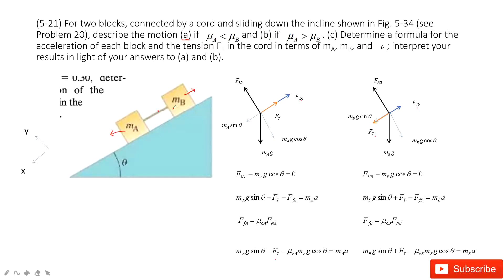In situation 2, if mu_A is larger than mu_B, then friction for A is larger and friction for B is smaller. Object A has more tendency to stay in place, while object B has more tendency to move down. So A and B are more likely to move closer to each other, which makes the tension on the cable disappear — the cable becomes loose.